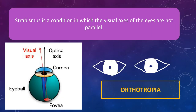First of all, what is strabismus or squint? Strabismus is basically a condition in which the visual axes of the eyes are not parallel. You should know what is meant by visual axis. The visual axis is an axis drawn from the point of fixation — that means where you are looking — to the fovea. If you draw a line from the point of fixation to the fovea, that is called the visual axis. Now if both eyes have similar, parallel visual axes — if both eyes are looking straight forward — that is called orthotropia.